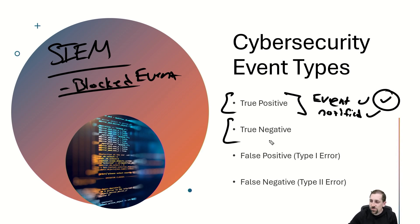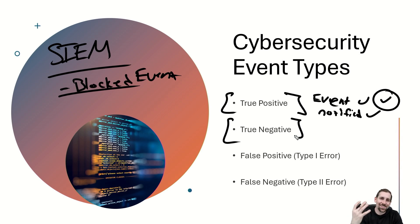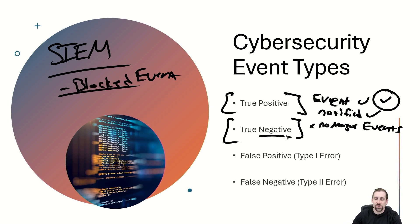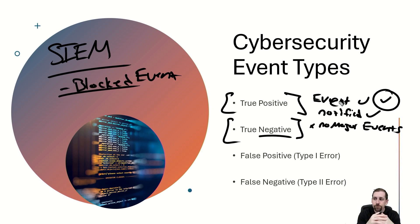The next is a true negative. Say you have a Thursday overnight crew monitoring your Microsoft Sentinel SIEM-like product, and during the changeover they communicate that there weren't any major events last night. There were no major events — that's called a negative result, as opposed to a positive result where there was an event. A negative result means there were no events, nothing was notified or identified as abstract, odd, or blocked. If this is true, that's a true negative result.